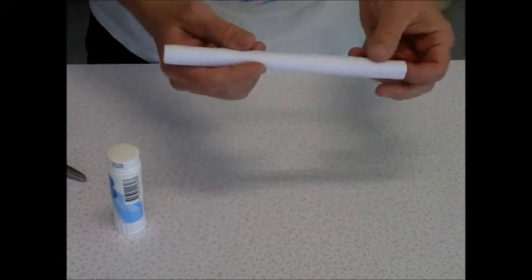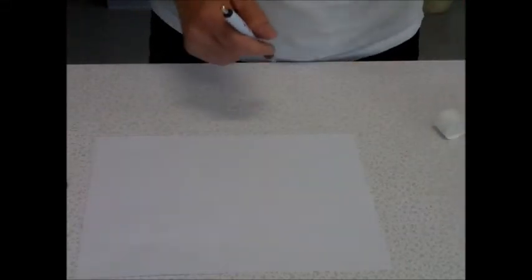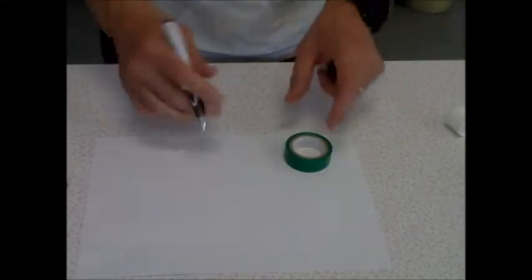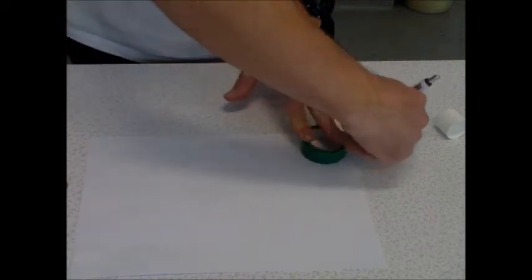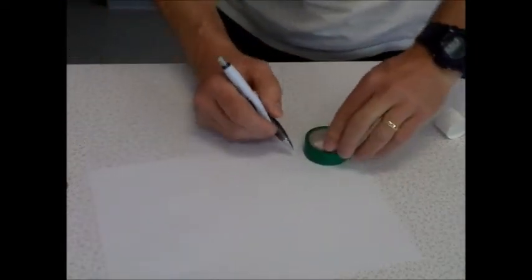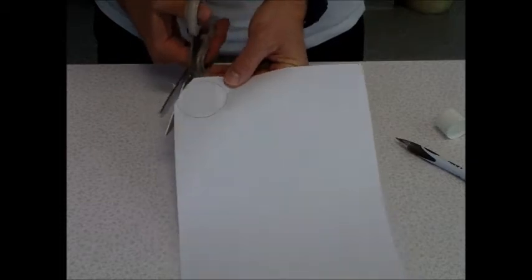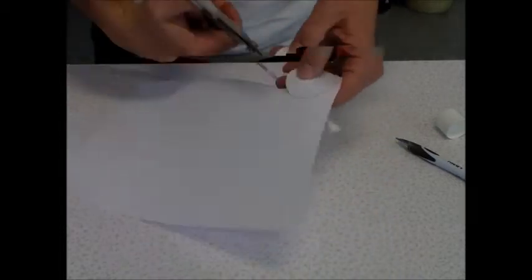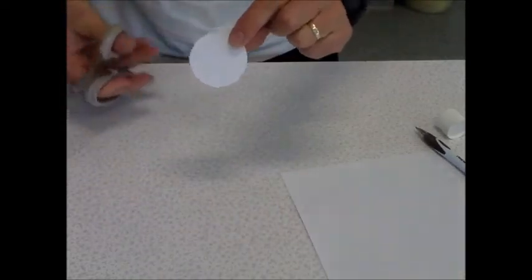Now the nose cone, we'll set that aside. You can take your roll of tape if you like, you want a circle. Cut out the circle, there's my circle of paper.